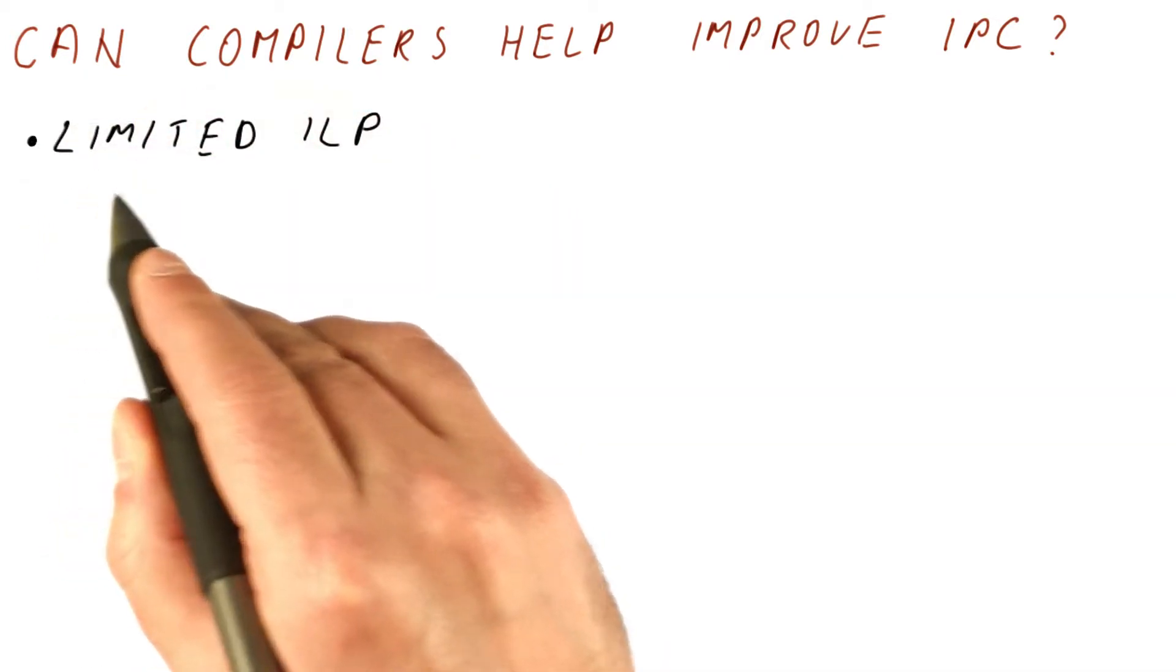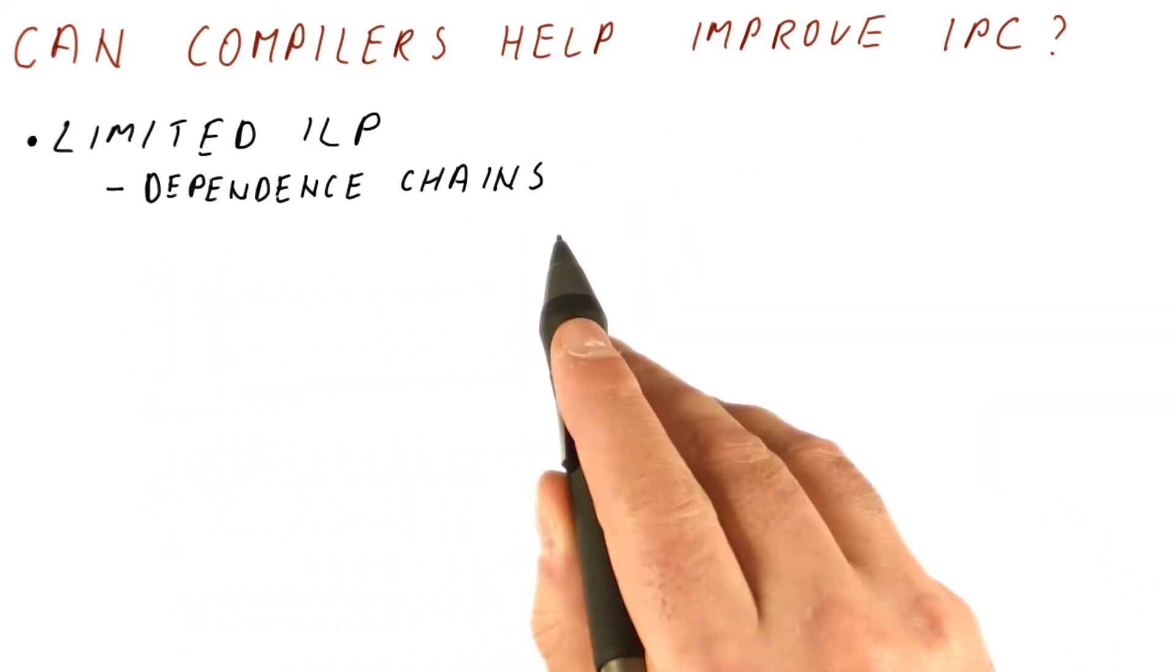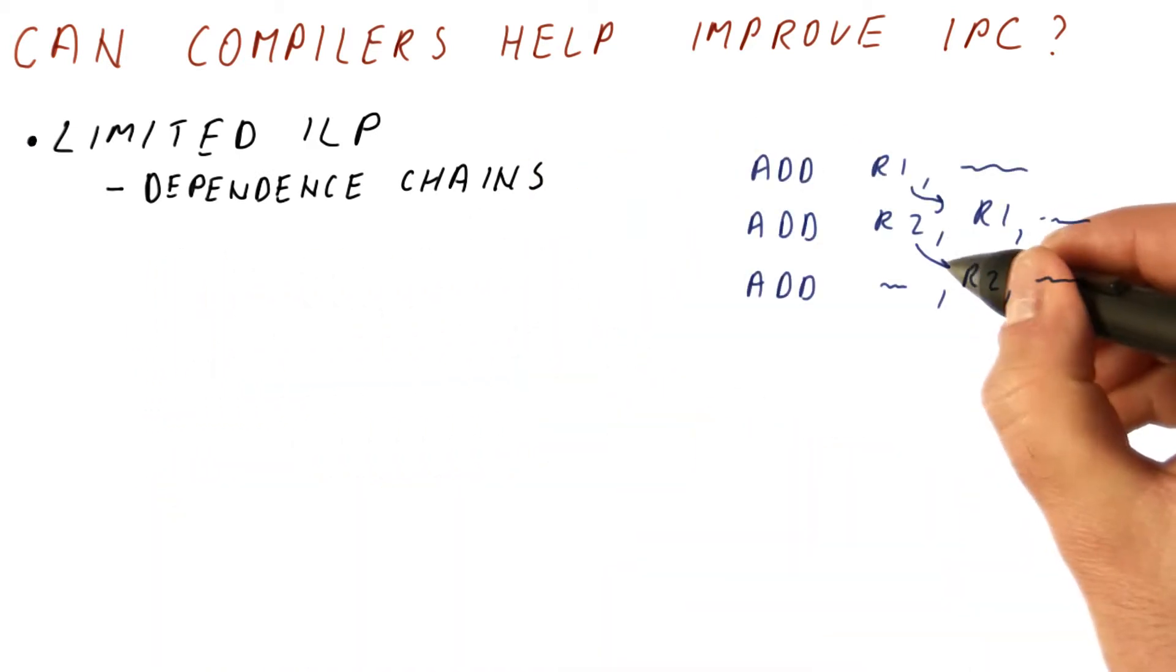There are really two things that the compiler can help with. One is the ILP of the program itself may be limited. For example, due to dependence chains, which is when we have instructions that depend on each other.